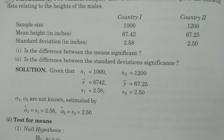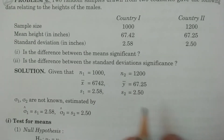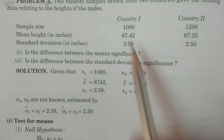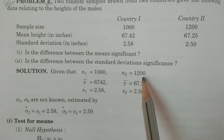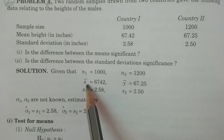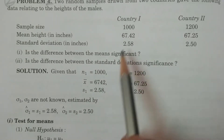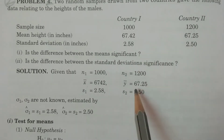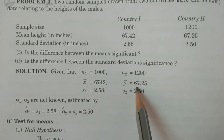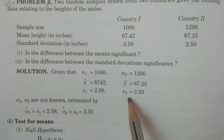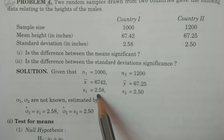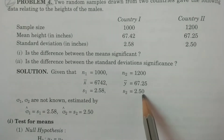First, note down the given values. N1 = 1000, N2 = 1200 are the sample sizes. X-bar, the first sample mean, is 67.42. Y-bar, the second sample mean, is 67.25. S1 and S2 are the sample standard deviations: first sample S1 = 2.58, second sample S2 = 2.50.